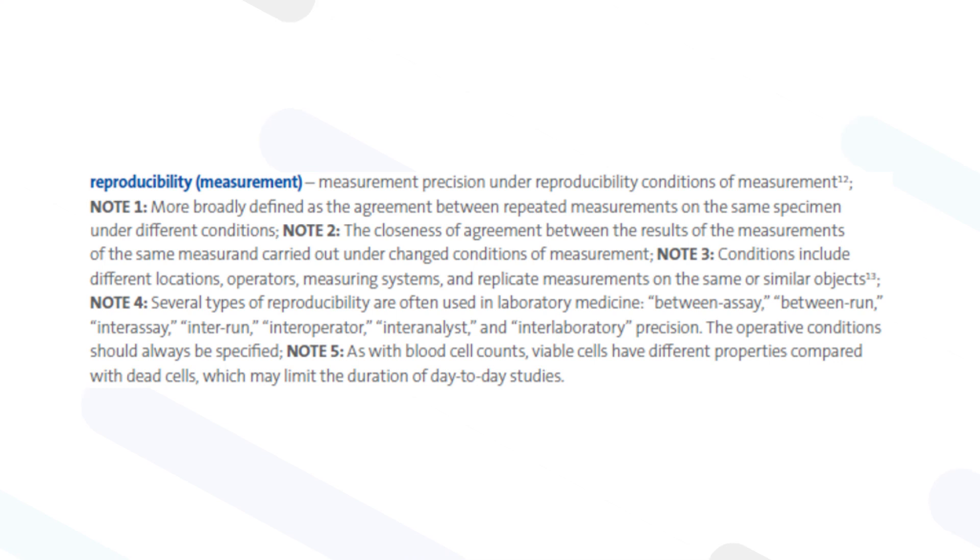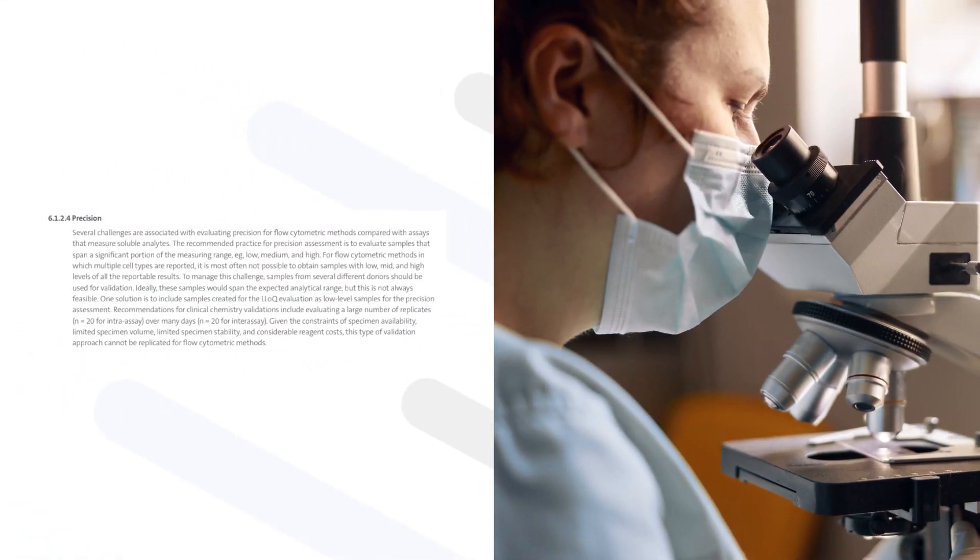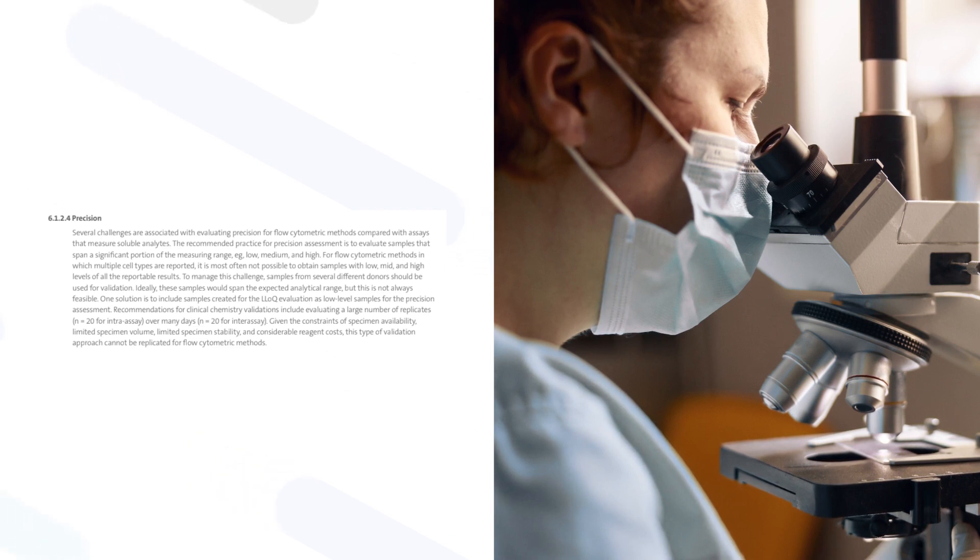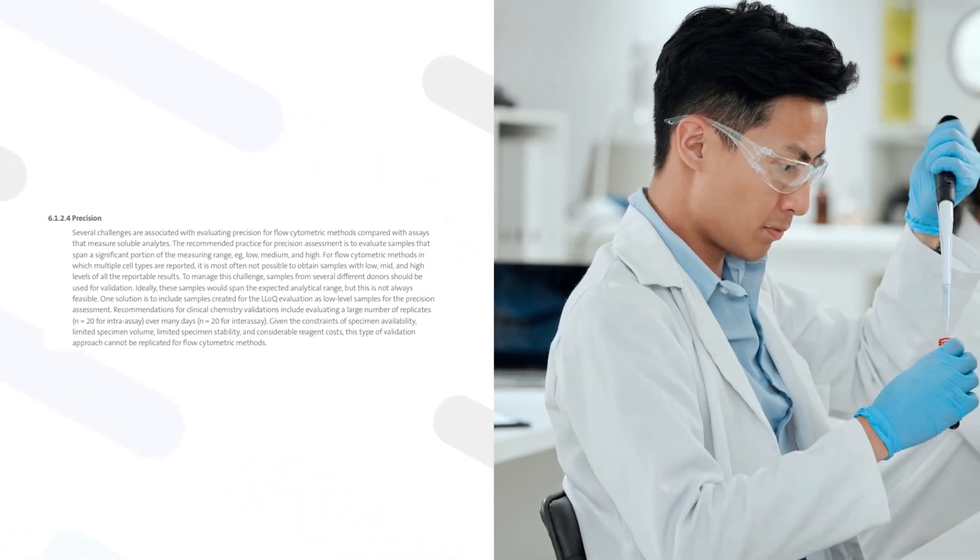Examples include different locations, operators, measuring systems, and replicate measurements on similar objects. Reproducibility can incorporate between-laboratory and between-instrument variability, which happens routinely.